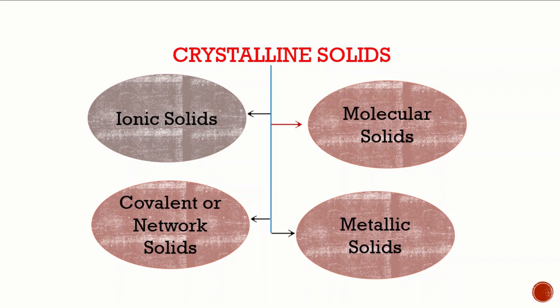Based on the nature of constituent particles and the binding forces between them, crystalline solids are further classified into the following four categories: ionic solids, molecular solids, covalent network solids, and metallic solids.